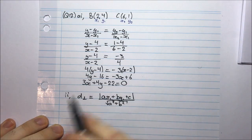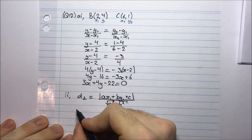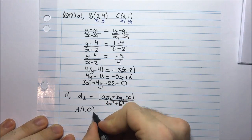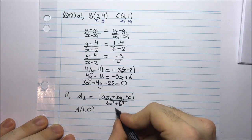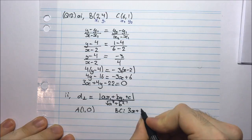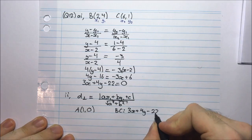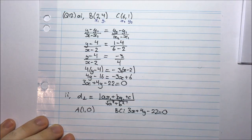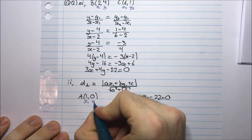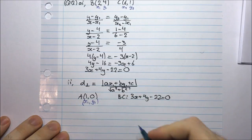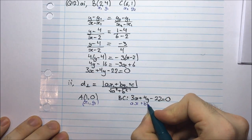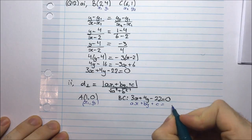What are the values we need to substitute? We have point A, which is (1, 0), and the equation of line BC is 3x plus 4y minus 22 equals 0. The point (1, 0) corresponds to (x1, y1), and this is the equation Ax plus By plus C equals 0.